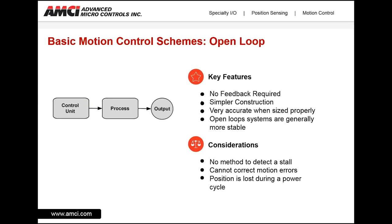Open loop systems can be very accurate when sized properly, and are generally more stable. Some of the considerations are: there is no method to detect stall, so if the motor stops, we will be unaware of that. We cannot correct for motion errors, and if the position is lost during a power cycle, there is no way to re-establish position on power-up.